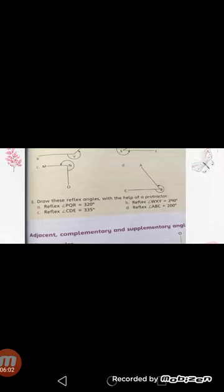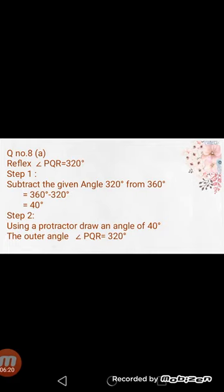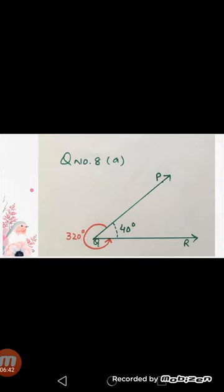Now move to question number 8. In question number 8 you have to draw the reflex angle with the help of a protractor — previously you calculated the reflex angle, and now you have to draw them. See the first part: reflex angle PQR is equal to 320 degrees. To draw this reflex angle, we subtract 320 degrees from 360 degrees. The result will be 40 degrees. Now using the protractor, draw an angle of 40 degrees, then label the reflex angle PQR outside as 320 degrees.